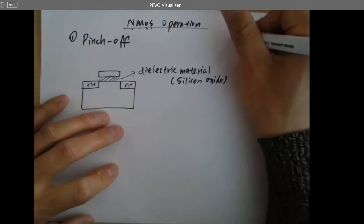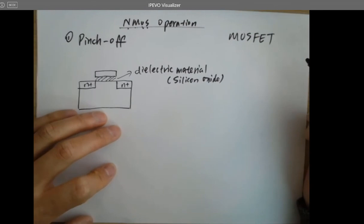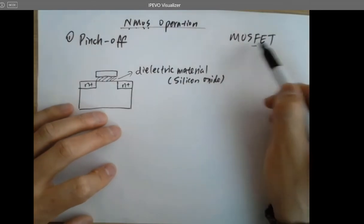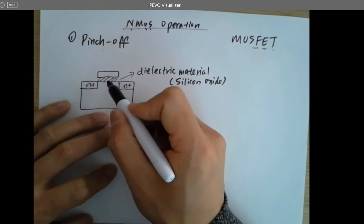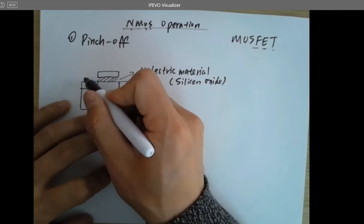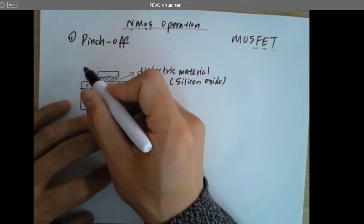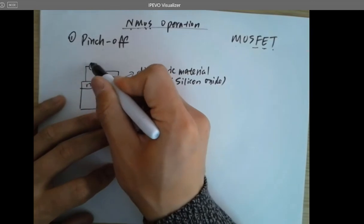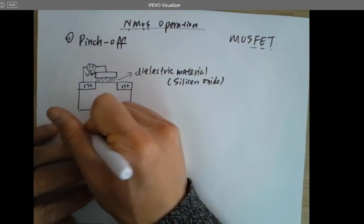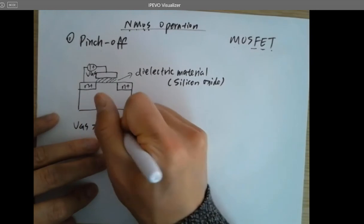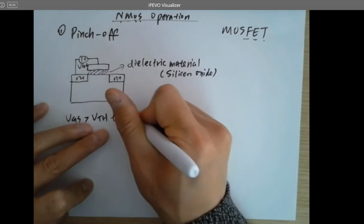N-type, where MOSFET stands for metal oxide semiconductor field effect transistor. And if you want to turn on this NMOS, you need a positive voltage larger than the threshold voltage, VTH, applied over VGS. This is what you have learned in logic. So VGS has to be larger than VTH, which is the threshold voltage, to turn on the channel and turn on the NMOS.